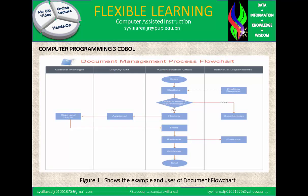Figure one shows the example and uses of a document flowchart — the document management process flowchart. We have the general manager who signs and issues, the deputy grant manager for approval. These represent where a document goes upon the completion of the required individual file.